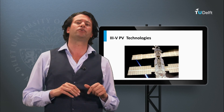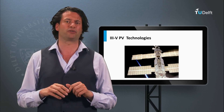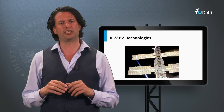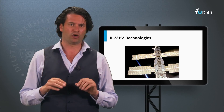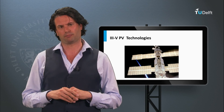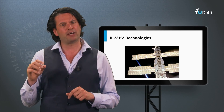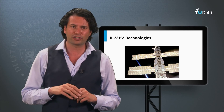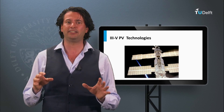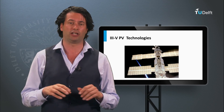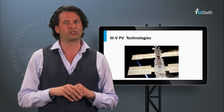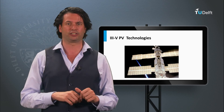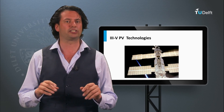The final PV technology we will discuss is based on III-V semiconductor materials such as gallium arsenide. III-V materials are being used in multi-junction devices, often processed on germanium wafers as substrate. The multi-junction based on III-V semiconductors are the most efficient solar cells today. A record conversion efficiency of 44% was obtained with a metamorphic triple junction in 2012. These solar cells are used in concentrator PV technology and in space applications, and will be discussed in week 5.